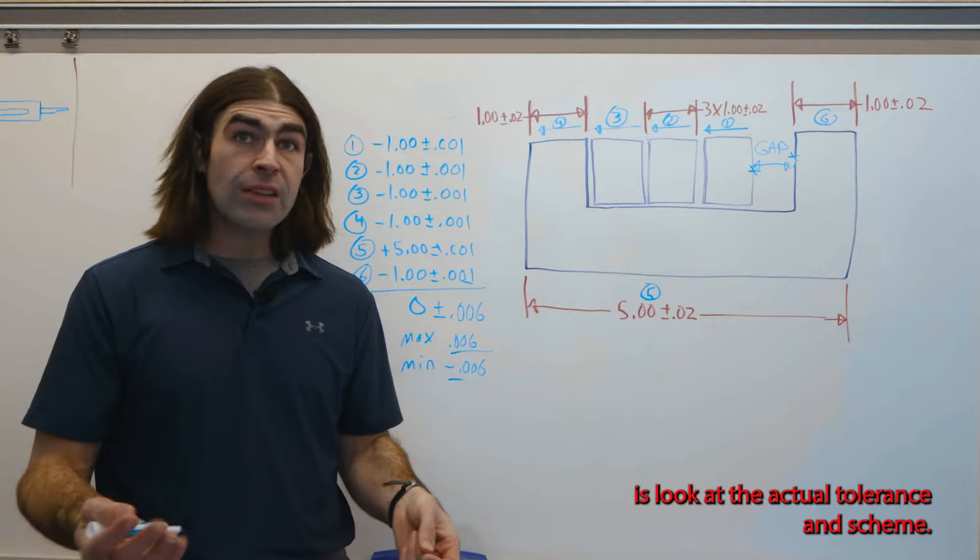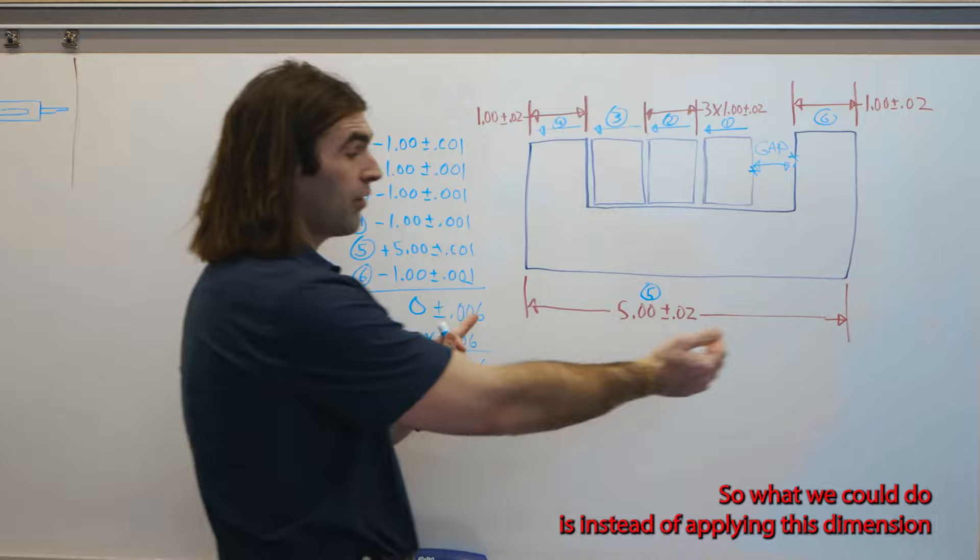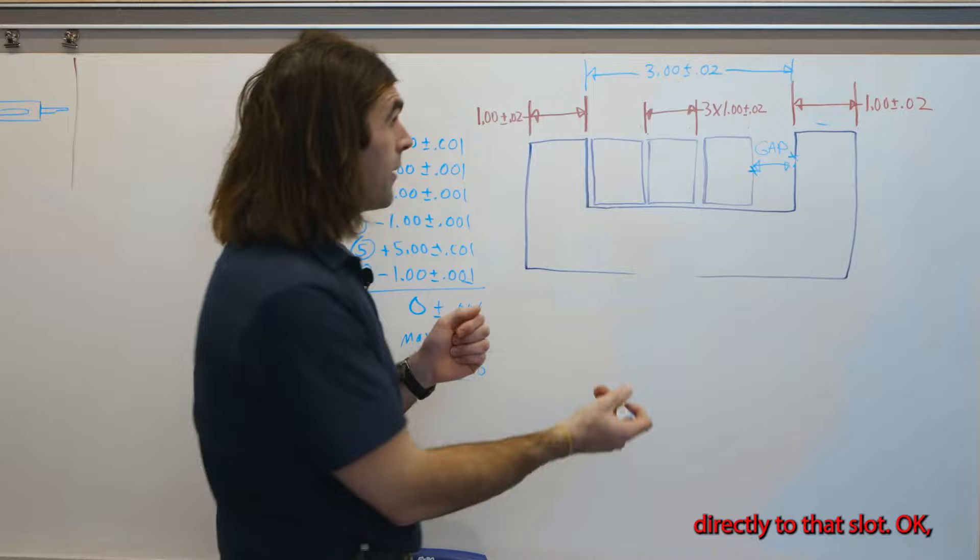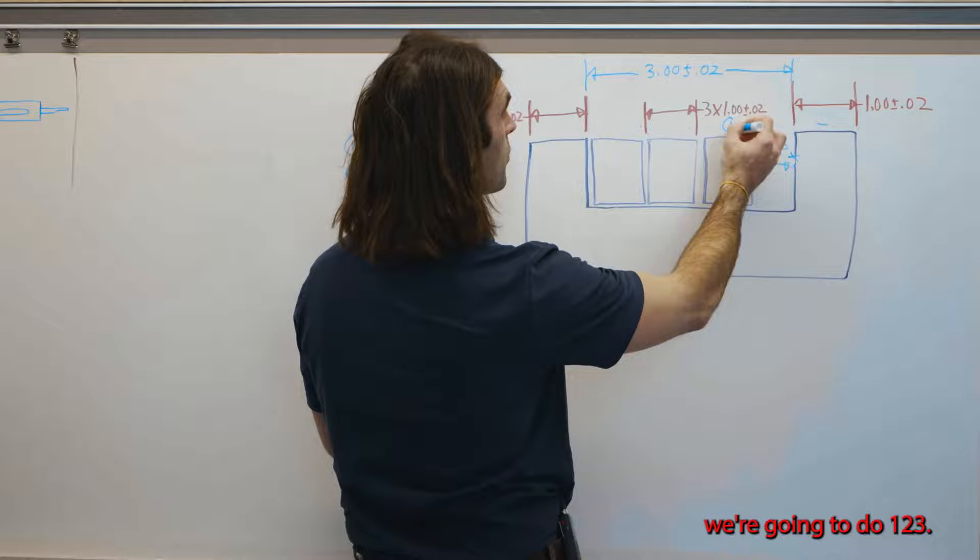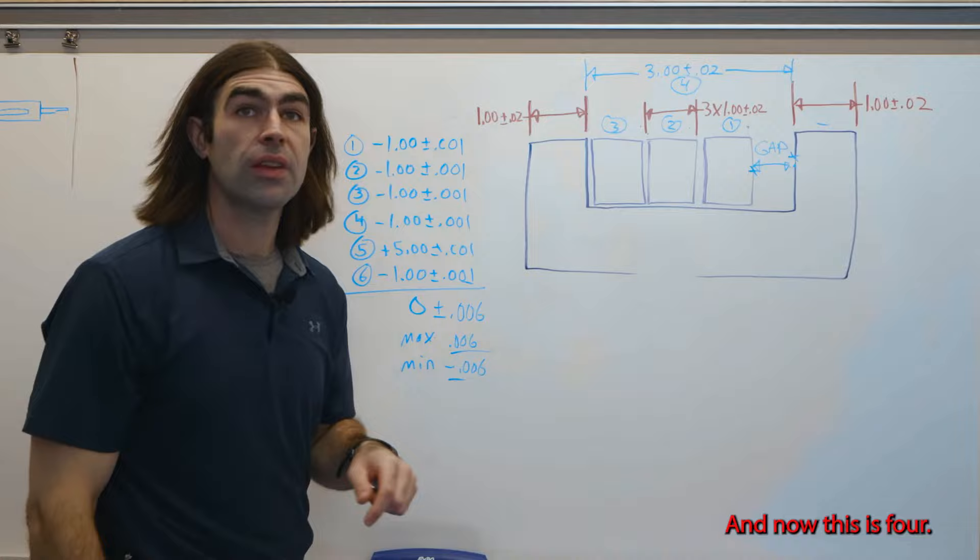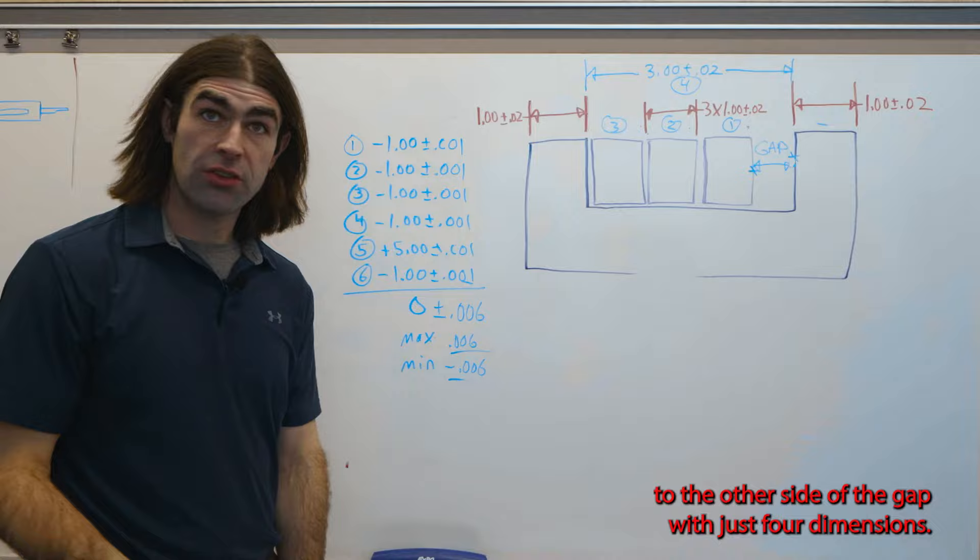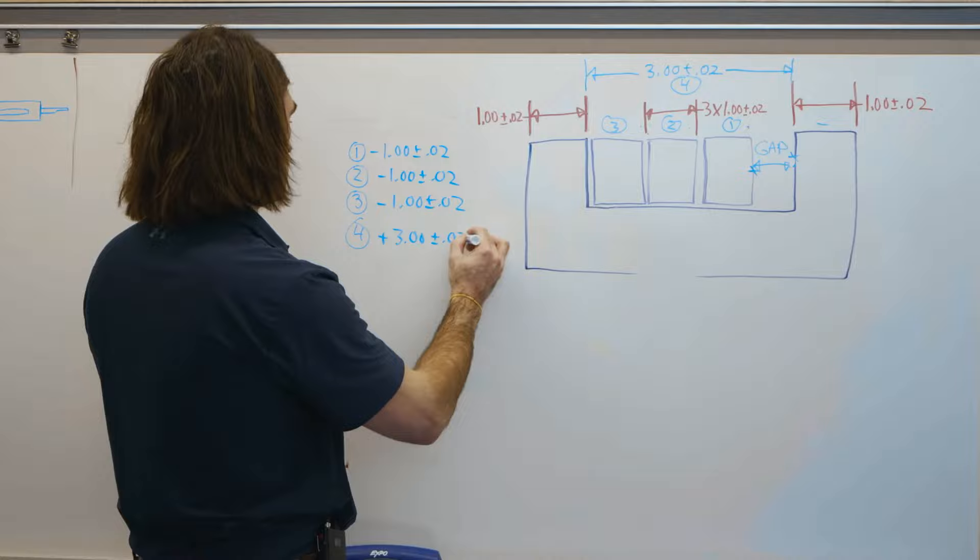So the first thing we'll do here is look at the actual tolerancing scheme. So what we could do is instead of applying this dimension overall, let's apply the dimension directly to that slot. So now when we do our stack-up, we're going to do one, two, three, and now this is four. So we can ignore this dimension and this dimension. We can get from one side of the gap to the other side of the gap with just four dimensions. So let's see what that does for us.